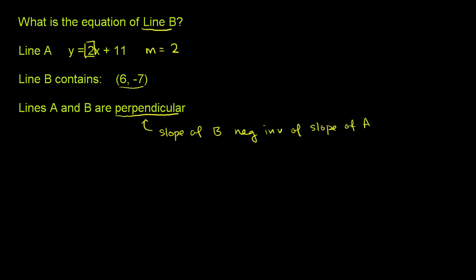What is the slope of B? What is B's slope going to have to be? Well, it's perpendicular to A, so it's going to be the negative inverse of this. The inverse of 2 is 1/2. The negative inverse of that is negative 1/2. So B's slope is negative 1/2.